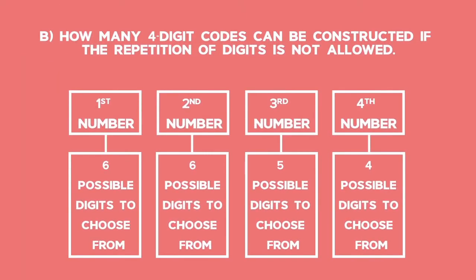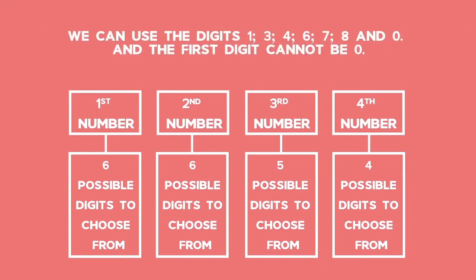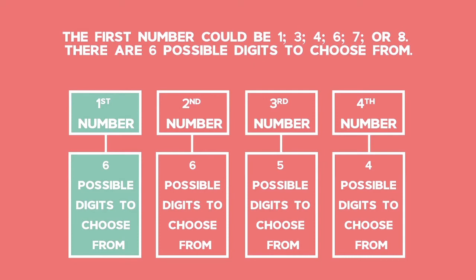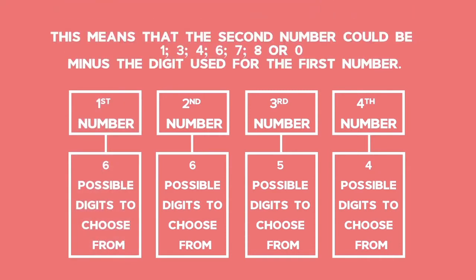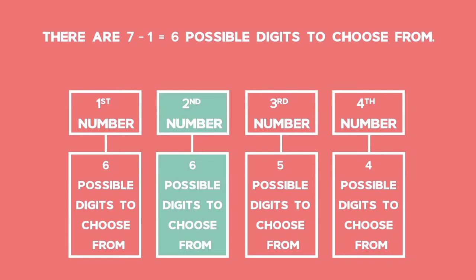Question B asks how many four-digit codes can be constructed if repetition of the digits is not allowed. We can use the digits 1, 3, 4, 6, 7, 8 and 0, and the first digit cannot be 0. This means that the second number could be any of the seven digits minus the digit used for the first number — there are 7 minus 1, which gives 6 possible digits to choose from.